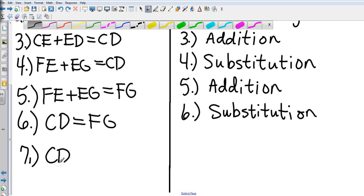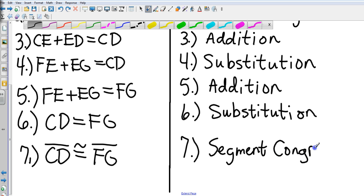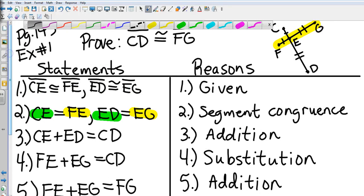Okay, changing our equal back to congruent to get the actual proof that we want. So we got step seven: CD is congruent to FG. Very beginning, we wanted to prove CD is congruent to FG, so we are good to go.